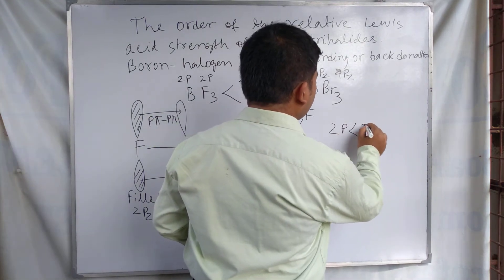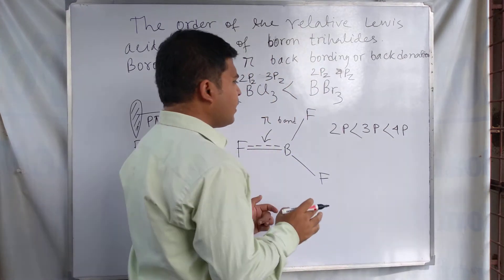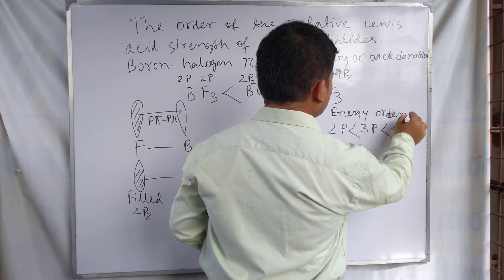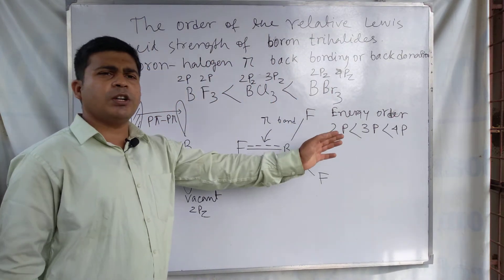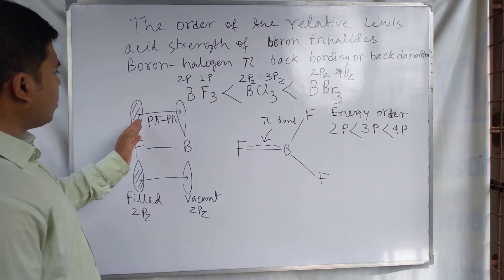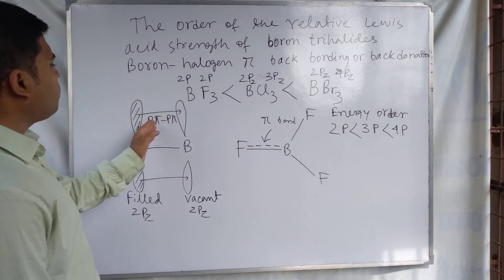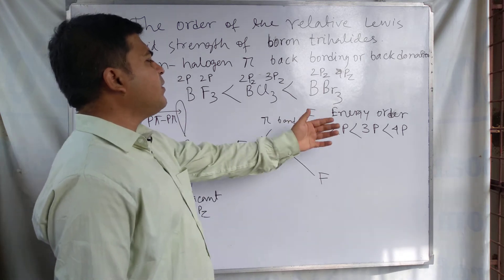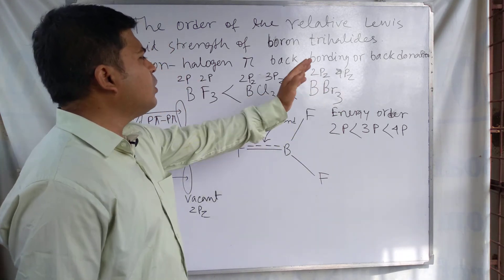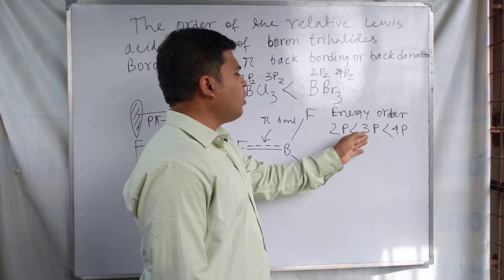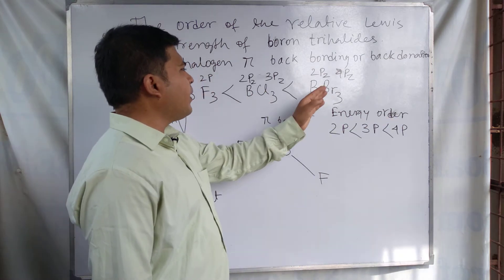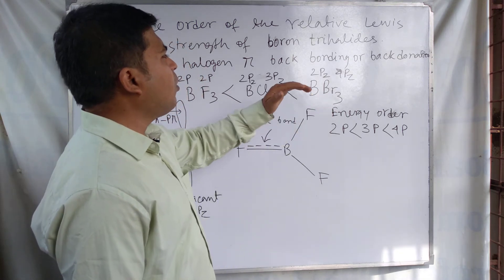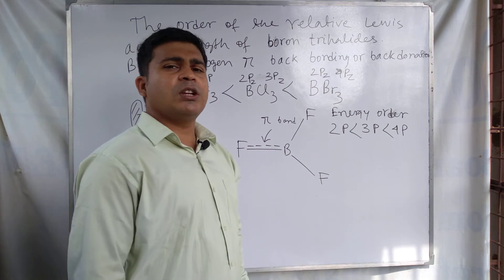The energy of the orbitals increases in the order 2p < 3p < 4p. In BF3, the 2pz orbitals of both boron and fluorine have equal energy, so p-pi p-pi back bonding occurs effectively. But in BCl3 and BBr3, this tendency to form pi back bonding reduces due to the unequal energies of the 2p and 3p or 4p orbitals, decreasing back donation progressively.